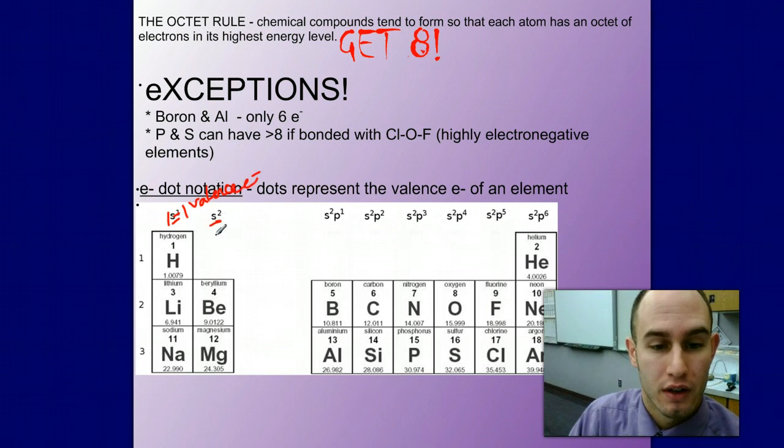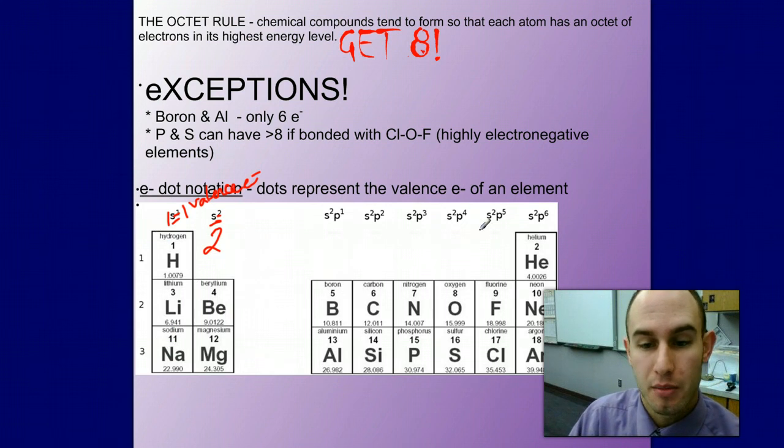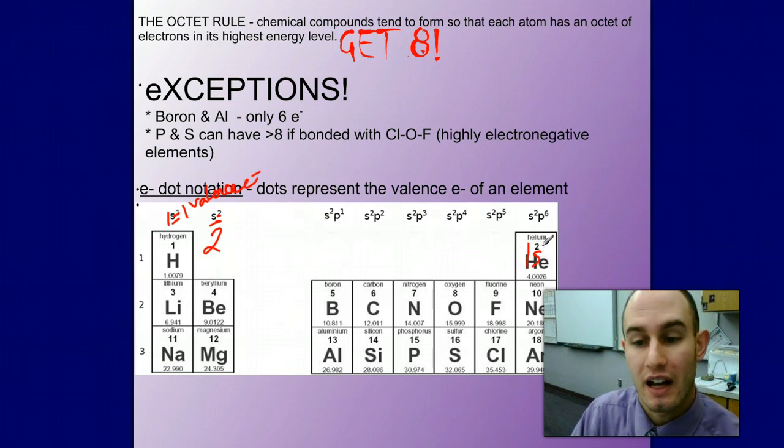Group 2, they are going to have two valence electrons because it is 2s2, 3s2. This is our s block. If we skip over here, this is our p block. Don't forget about helium which is really a 1s2. That is one of the exceptions, it is just kind of out of place.